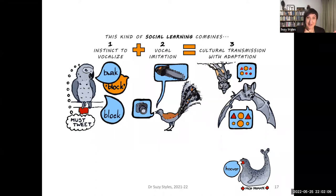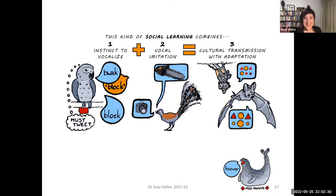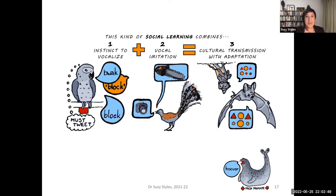We can see the combination of text and images together to provide a richer, more elaborated knowledge structure for students to hook their memories onto. Social learning is elaborated into three concepts: the instinct to vocalize, vocal imitation, and cultural transmission with adaptation. Alex the parrot exemplifies instinct to vocalize; an Australian lyrebird exemplifies vocal imitation, known for mimicking machines and other birds; and a baby bat mimicking adult bat vocalizations exemplifies cultural transmission with adaptation. By providing concrete examples and information through more than one channel — not just text but also images — we provide more chances for students to build richly elaborated representations.